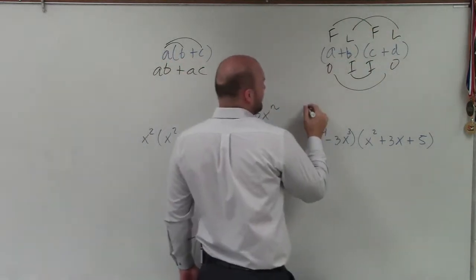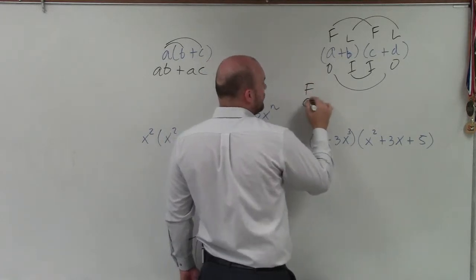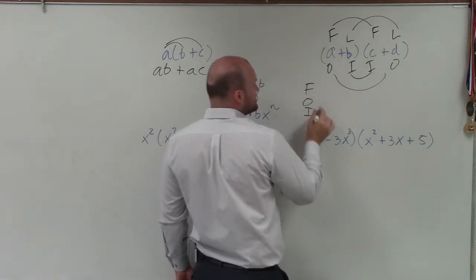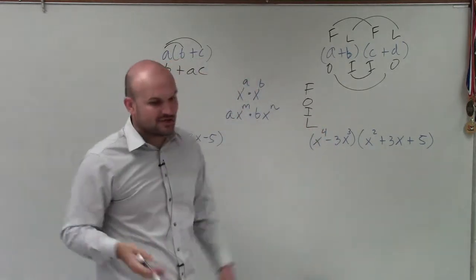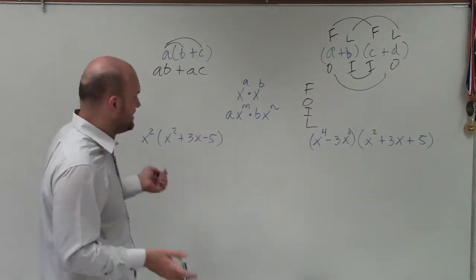And also, sometimes we create FOIL face. And then what we do is we just write out, what is the product of my first terms? Which would be a times c. What is the product of my outer terms? And then inner terms, and then last terms. And then we just combine them by adding them in.